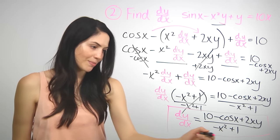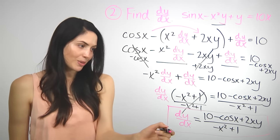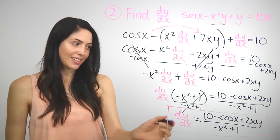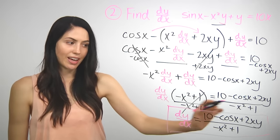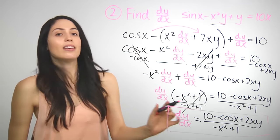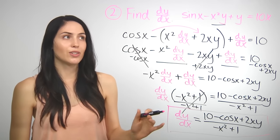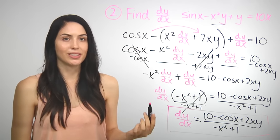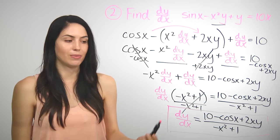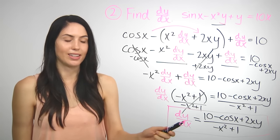That looks like a mess, but that is exactly correct. You have x's, you have y's — so this is your answer for the implicit differentiation dy/dx.